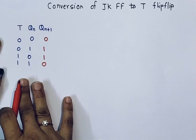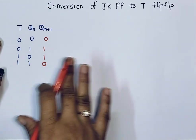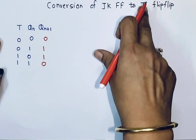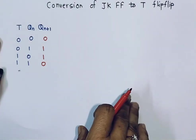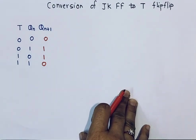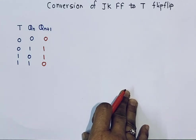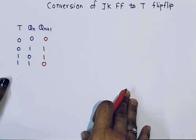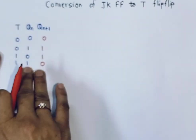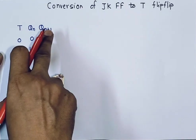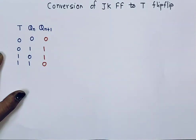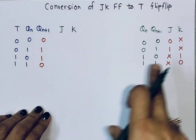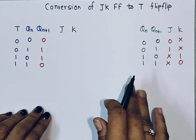This is the truth table of the T flip-flop. What we have is a JK flip-flop and what we want is a T flip-flop. We must know the behavior of the T flip-flop, but since we have a JK flip-flop, we must also know the truth table and excitation table of the JK flip-flop. The excitation table is used when we know the present state output and the expected next state output, but need to predict the inputs based on those outputs.